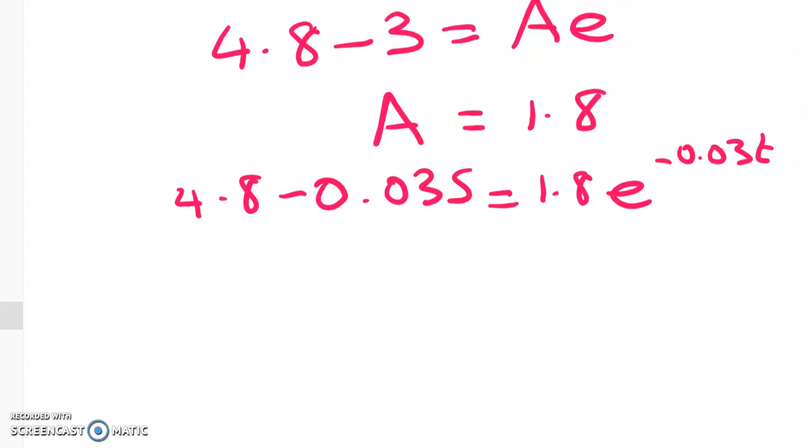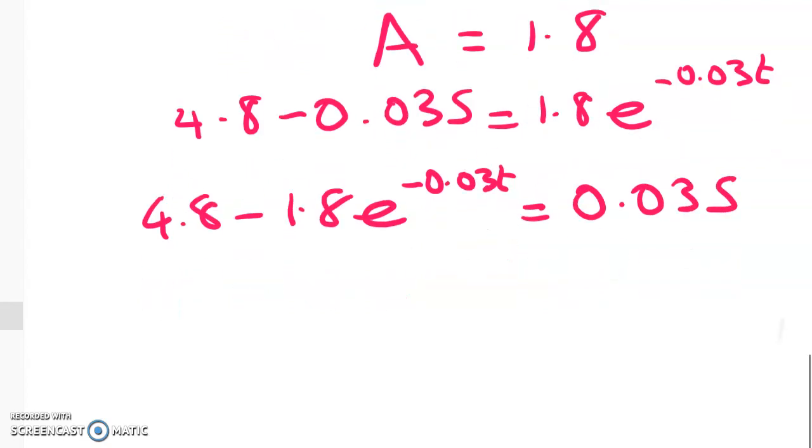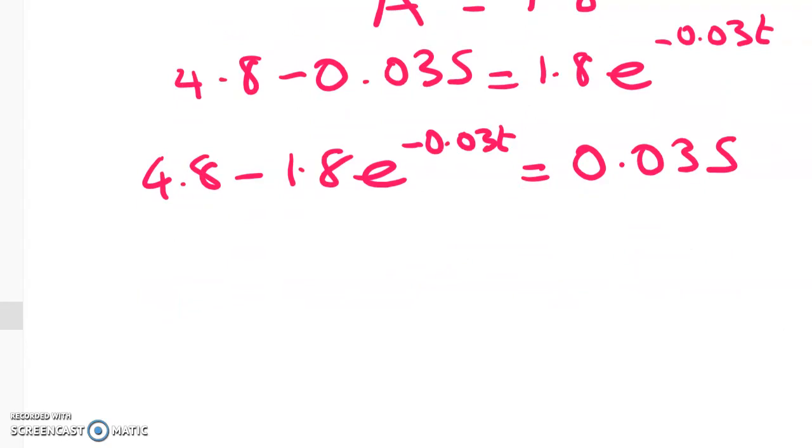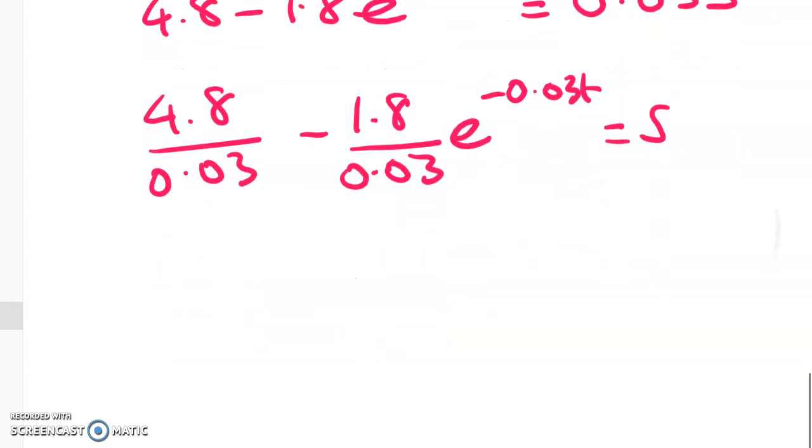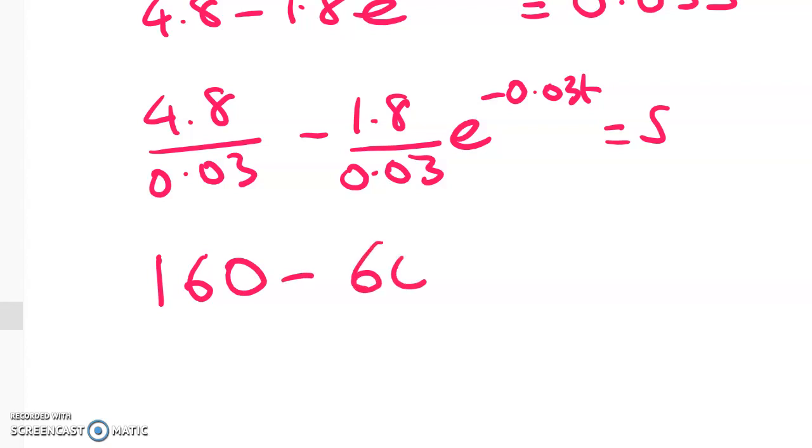What have we got? 4.8 minus 1.8 e to the negative 0.03T is equal to 0.03S. So now I'm going to get rid of that horrible decimal. 4.8 over 0.03 minus 1.8 over 0.03 is equal to s. And I get some nice round numbers now. So this gives me 160 minus 60e to the negative 0.03T. So that's s.